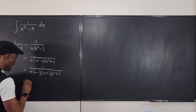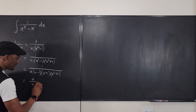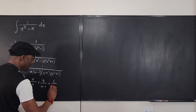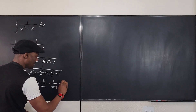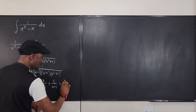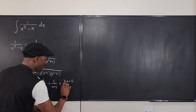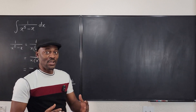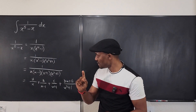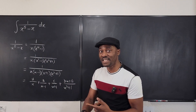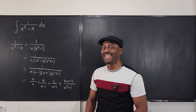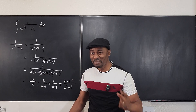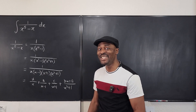So you can have A over x, plus B over x minus 1, plus C over x plus 1, plus Dx plus E over x squared plus 1. Then you have to find A, B, C, D, and E, and then integrate each of them. But there is a better way — let me show you.